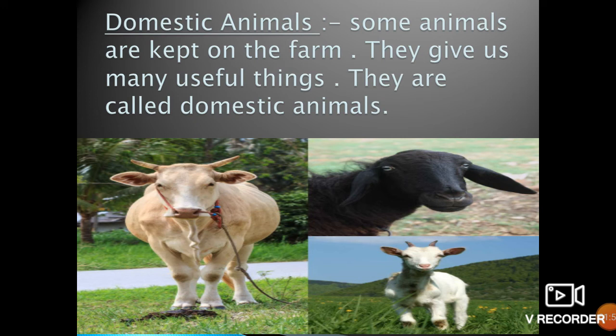The next category is domestic animals. Some animals are kept on the farm and they give us many useful things. They are called domestic animals. We should take proper care of domestic animals. Common examples include goat, cow, buffalo, ox, donkey, and others.